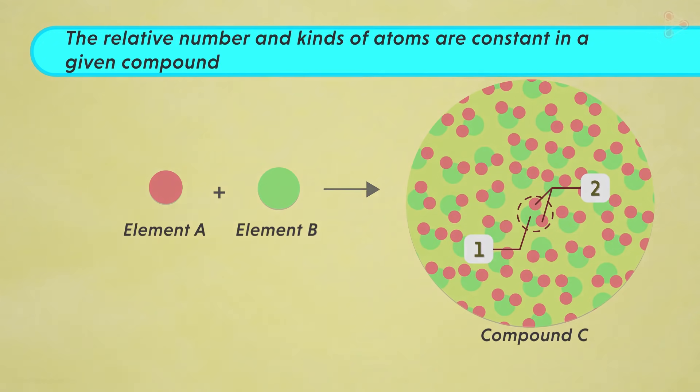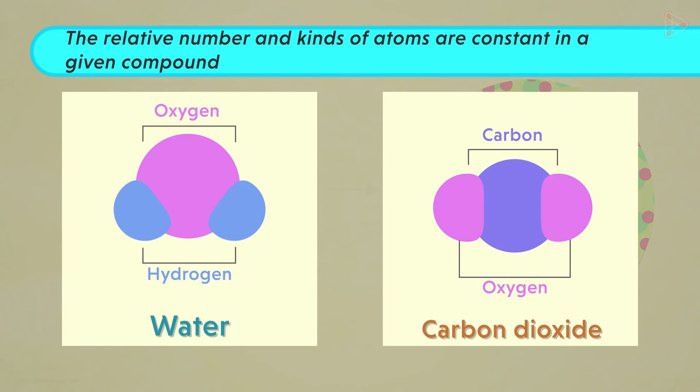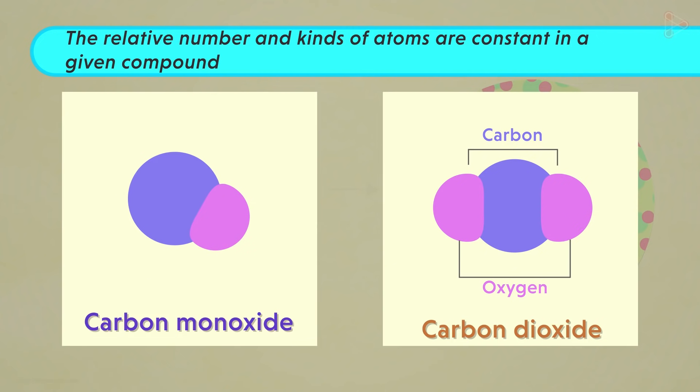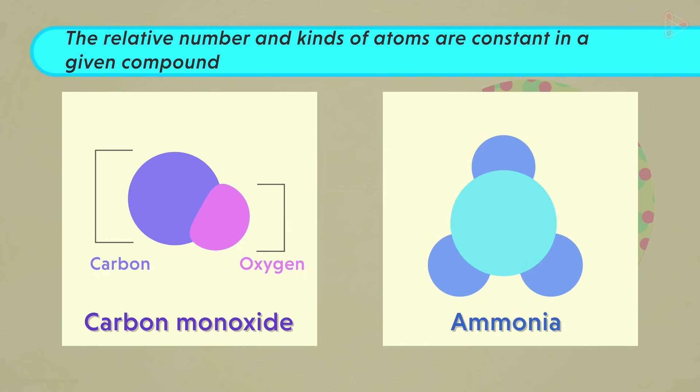We've already looked at two examples, water and carbon dioxide. In case of one unit of water, we always have two hydrogen atoms and one oxygen atom. And in a single unit of carbon dioxide, we have one carbon and two oxygen atoms. Carbon monoxide has one atom of each, that is carbon and oxygen. While one unit of ammonia always has one nitrogen atom bound to three hydrogen atoms. So the number of atoms will always be constant in a unit of a particular compound.